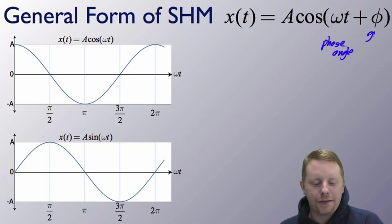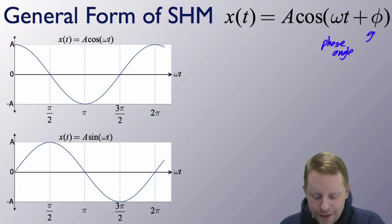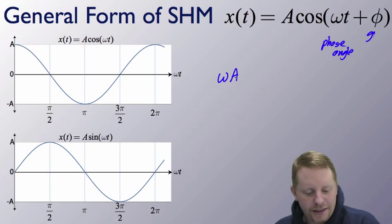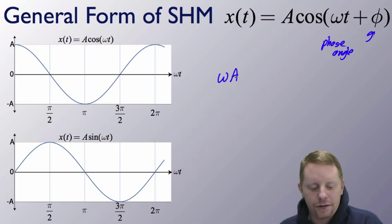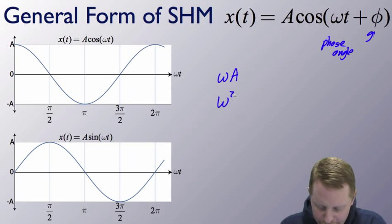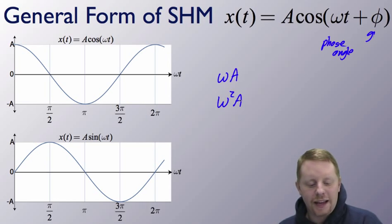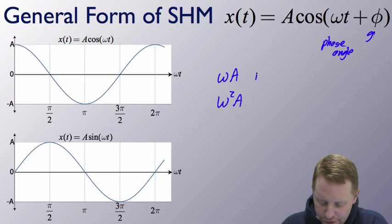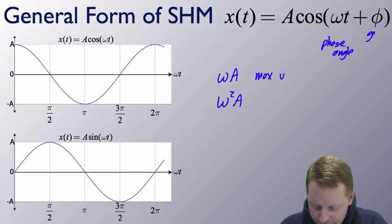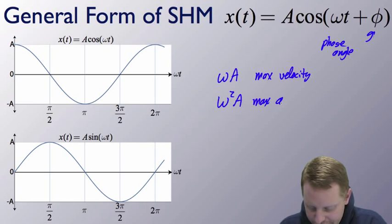If the maximum displacement of an object undergoing simple harmonic motion is a, then the maximum speed of the object is going to be omega a, which you can find by taking the slope of the position-time curve. And the maximum acceleration is going to be omega squared a, which you would get by taking the slope of the velocity-time curve. So this would be your max velocity, and omega squared a would be your max acceleration.